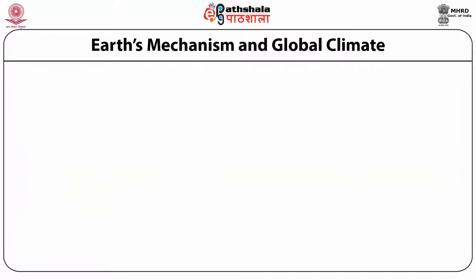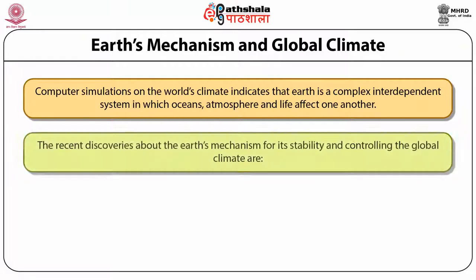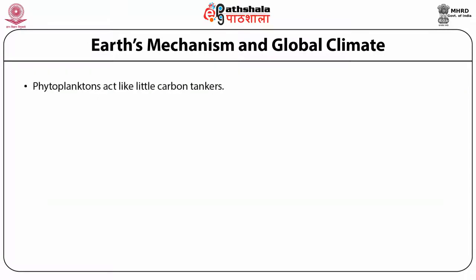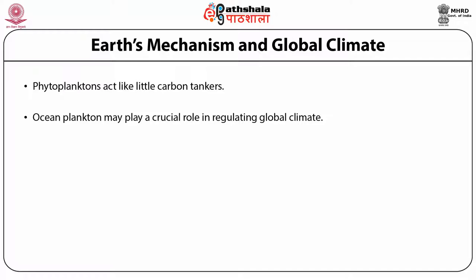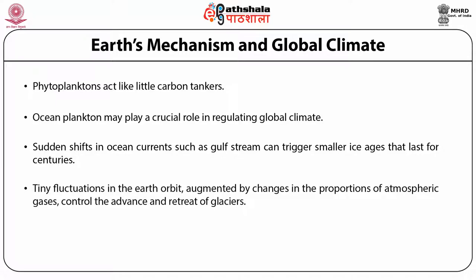Computer simulations on the world's climate indicate that Earth is a complex interdependent system in which oceans, atmosphere and life affect one another. Plant and animal life have saved the Earth from a fate similar to Venus's runaway greenhouse effect. Ocean plankton may play a crucial role in regulating global climate, and sudden shifts in ocean currents such as the Gulf Stream can trigger smaller ice ages that last for centuries. Tiny fluctuations in the Earth's orbit, augmented by changes in atmospheric gas proportions, control the advance and retreat of glaciers.